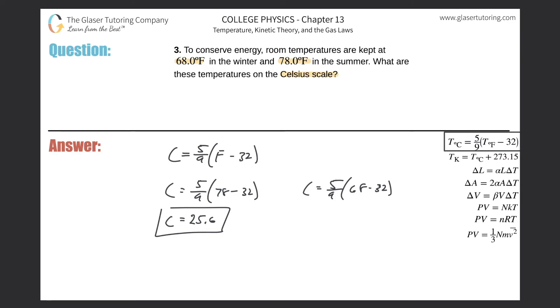Second one, 5 ninths times then 68 minus 32. And here we go. We'll have a value of 20 degrees Celsius, right? 20.0.